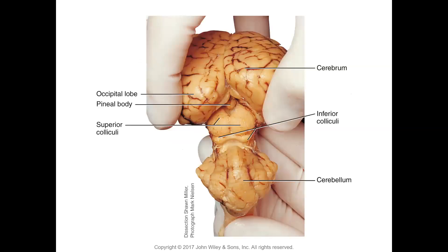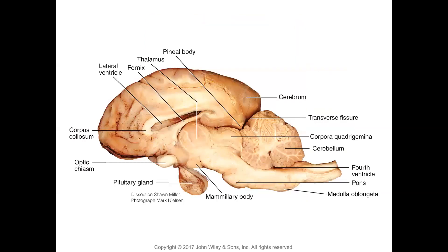The posterior view of the sheep brain midbrain shows the cerebrum's occipital lobe, the superior and inferior colliculi visible as two sets of twins, and then the cerebellum. In the mid-sagittal section through the sheep brain, you can see the spinal cord, medulla oblongata, pons, mammary body, fourth ventricle, cerebellum, and corpora quadrigemini with its superior and inferior colliculi.